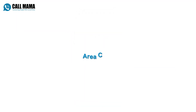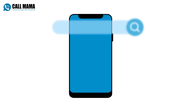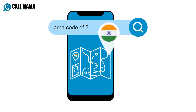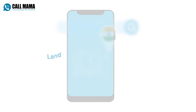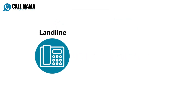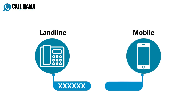Third, the area code. This is a unique code that identifies a specific city or region in India. Here are the formats of an Indian landline and mobile number. A landline number in Mumbai might have a six-digit area code, while a mobile number might only have a four-digit area code.